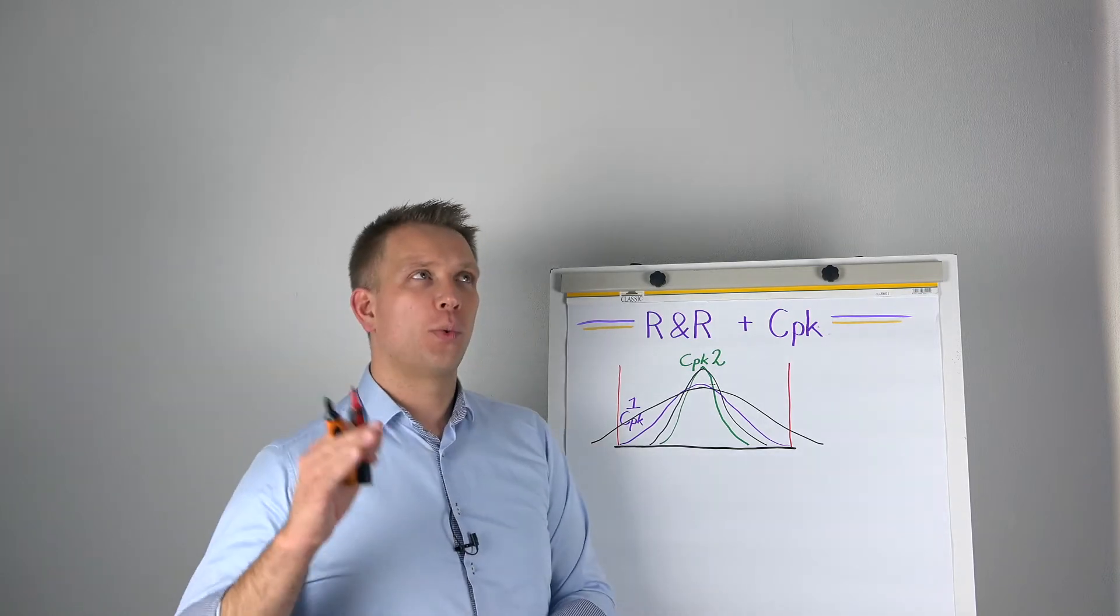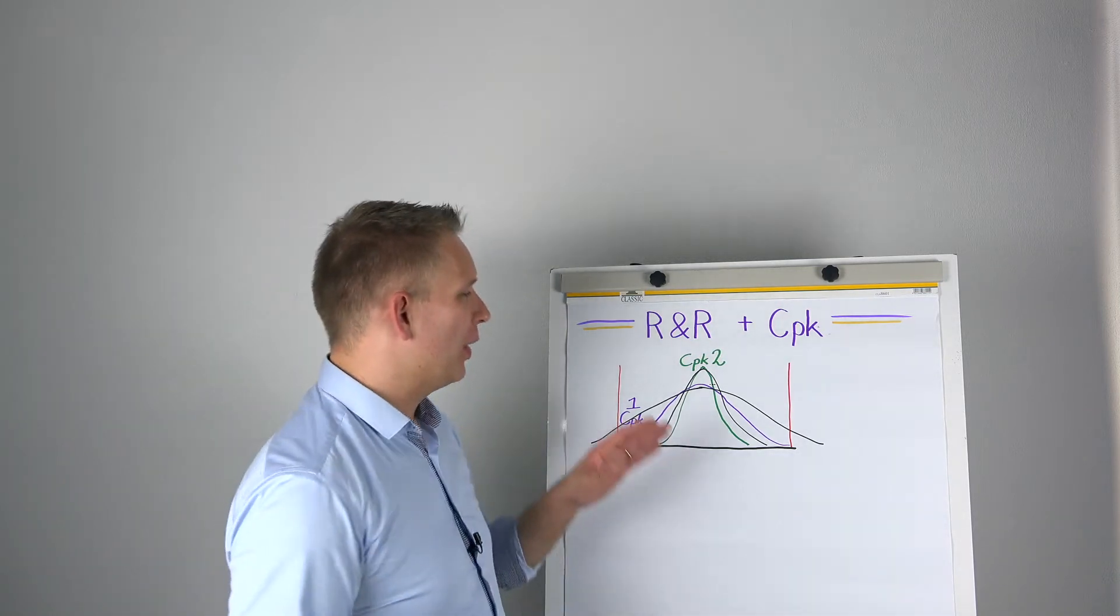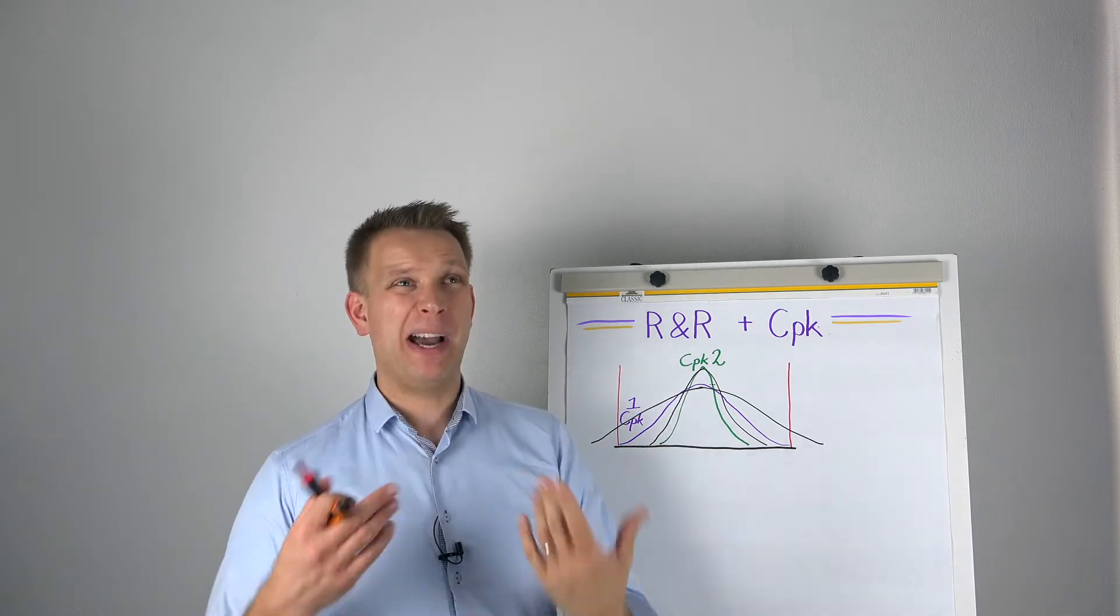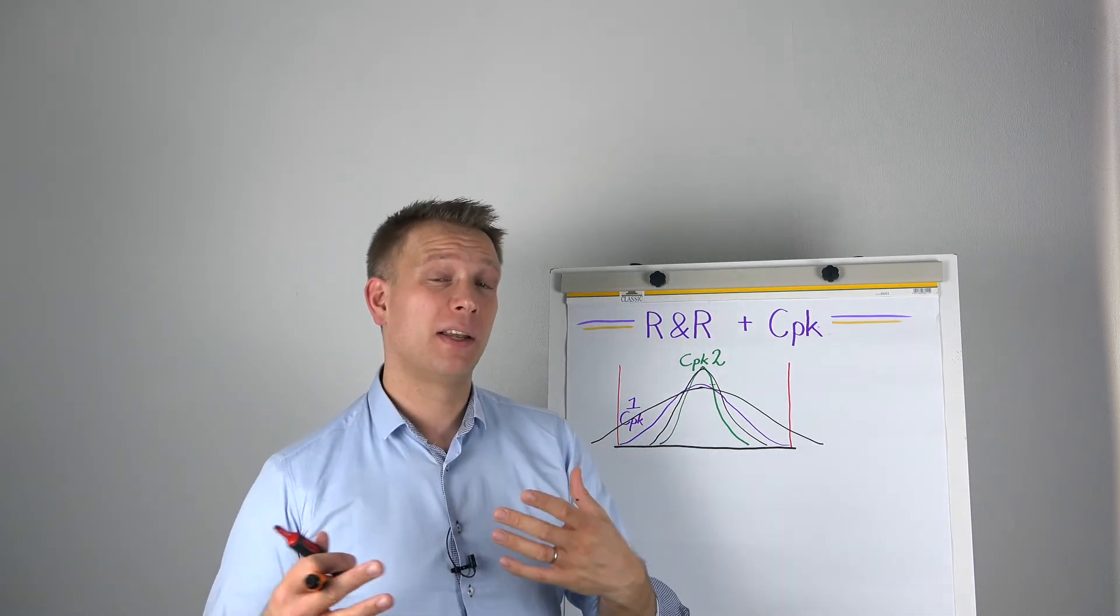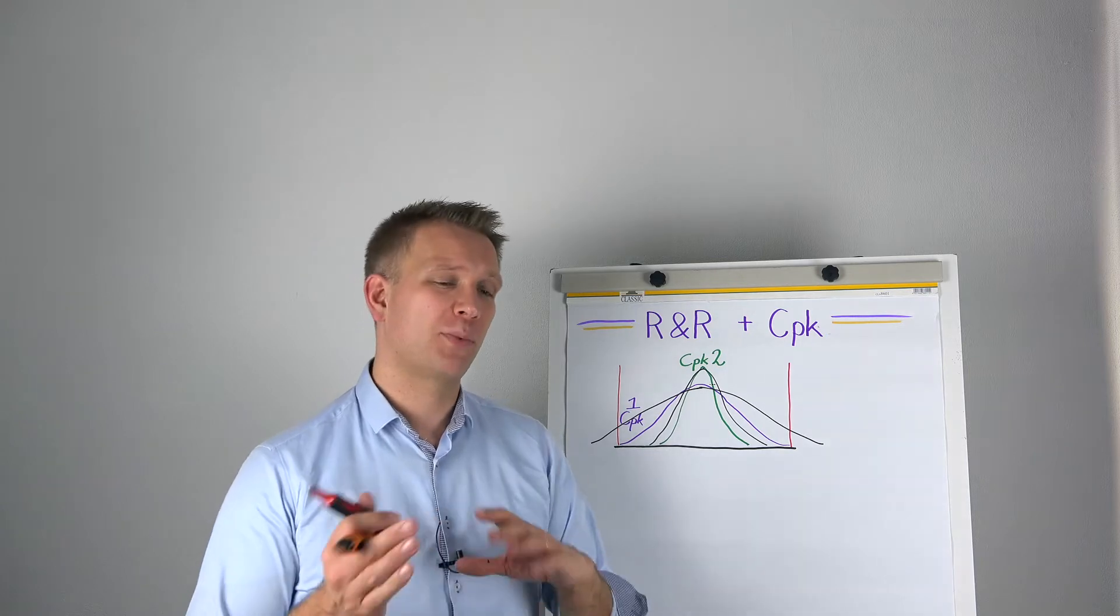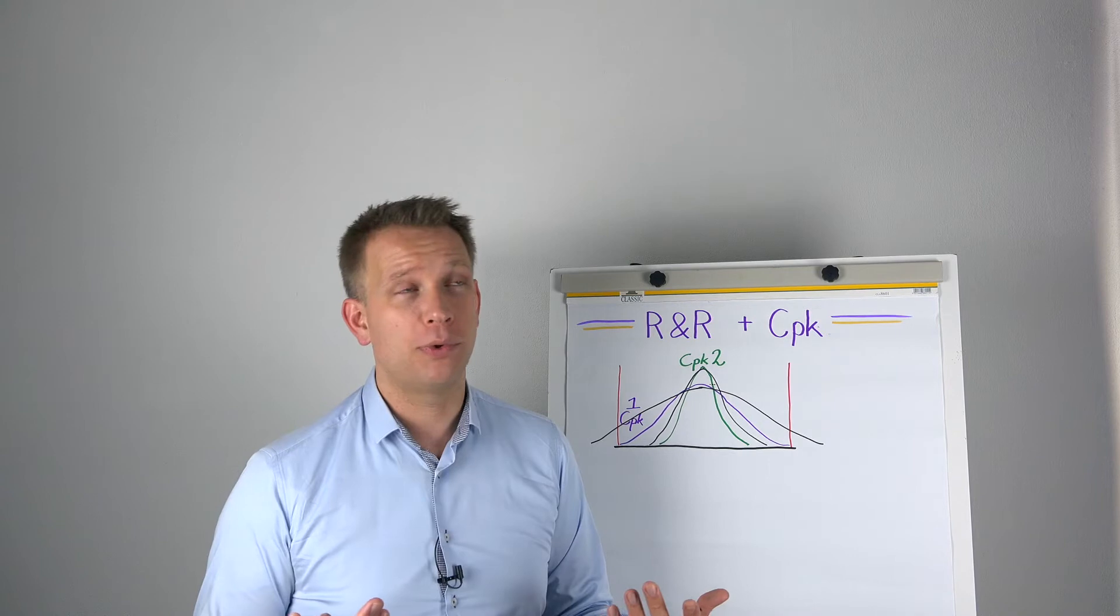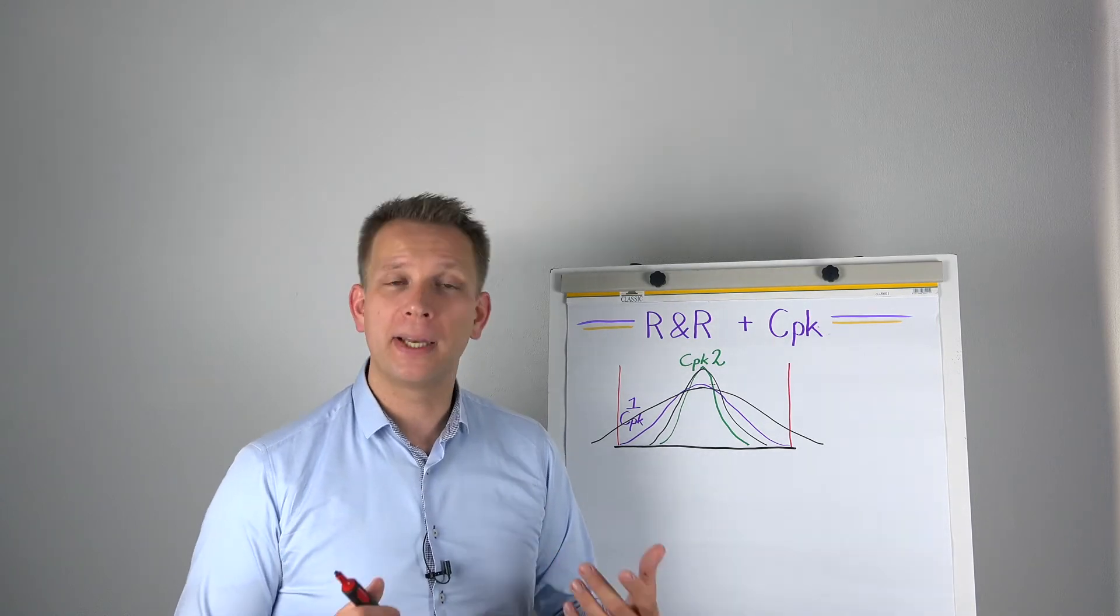Now, why is this 1.33 mentioned? Well, in fact, if you do this with a 1.33 CPK, and you add about 25 percent based on the measurement system, 25 to 30 percent, you end up with a CPK of 1, and you end up with what is basically the bare minimum of acceptability.